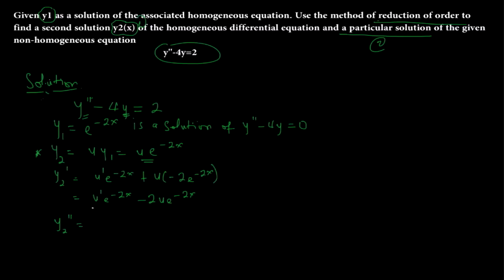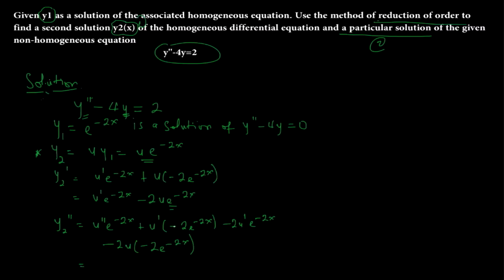y2'' is the derivative of y2'. Applying the product rule again: u''·e^(-2x) plus u'·(-2)e^(-2x), then differentiating the second term gives minus 2u'·e^(-2x) and minus 2u times (-2)e^(-2x). Expanding: y2'' = u''·e^(-2x) minus 4u'·e^(-2x) plus 4u·e^(-2x).